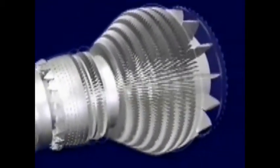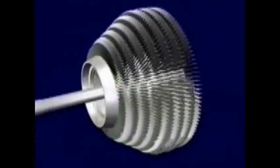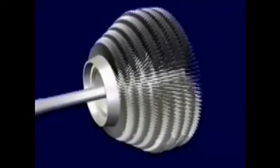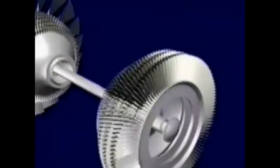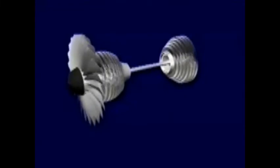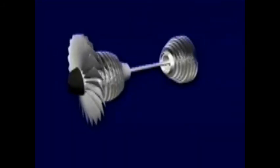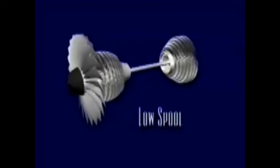Next, the air passes through the larger low-pressure turbine. This turbine has two purposes: first, it extracts enough energy from the air to power the low-pressure compressor at the front of the engine core — these two components are connected via a second shaft, which passes through the center of the high spool. However, the second and more important job of the low-pressure turbine is to turn the large titanium fan blades up front. The fan is connected to the same shaft as the low-pressure compressor and low-pressure turbine. Together, these three components make up the low spool.